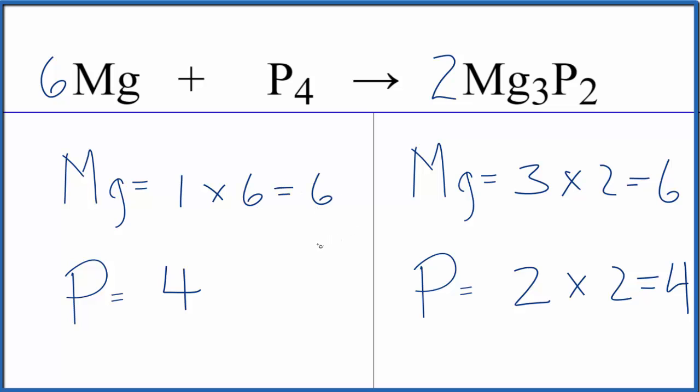This equation is balanced. This is Dr. B with the balanced equation for Mg plus P4 yields Mg3P2. Magnesium plus tetraphosphorus gives us this magnesium phosphide. Thanks for watching.